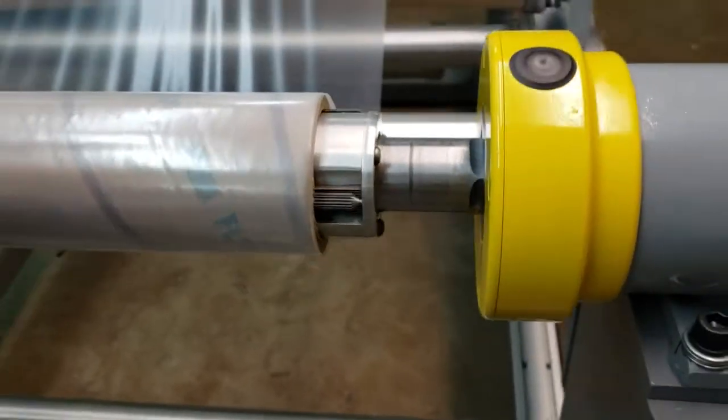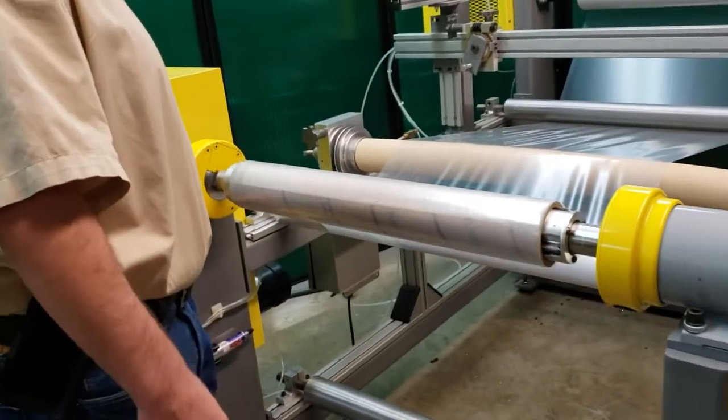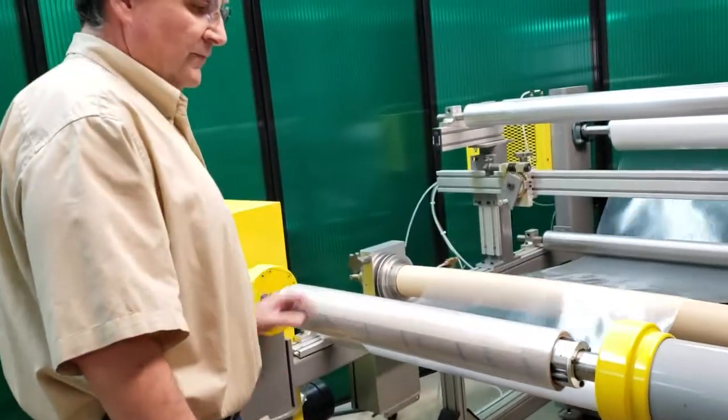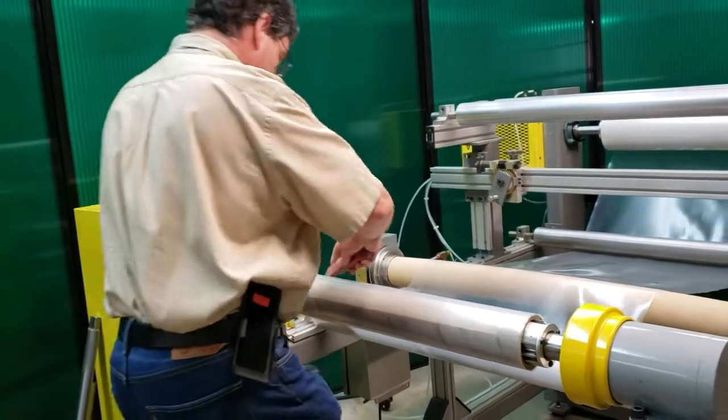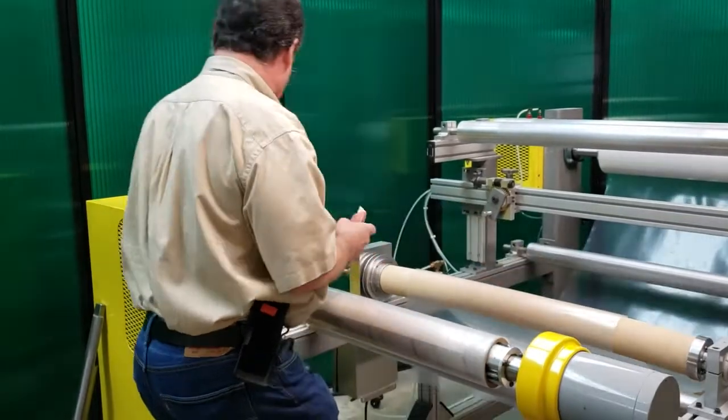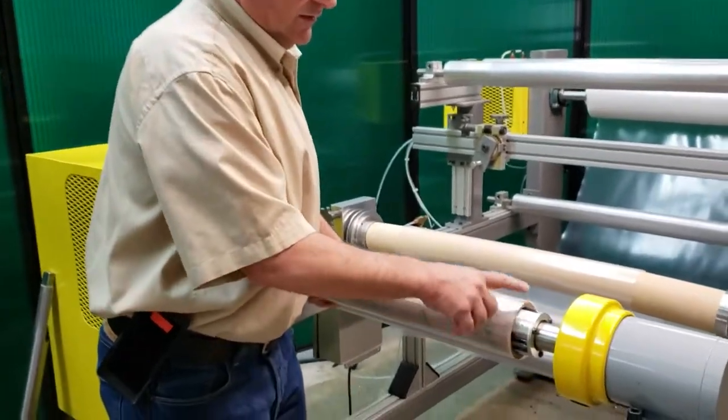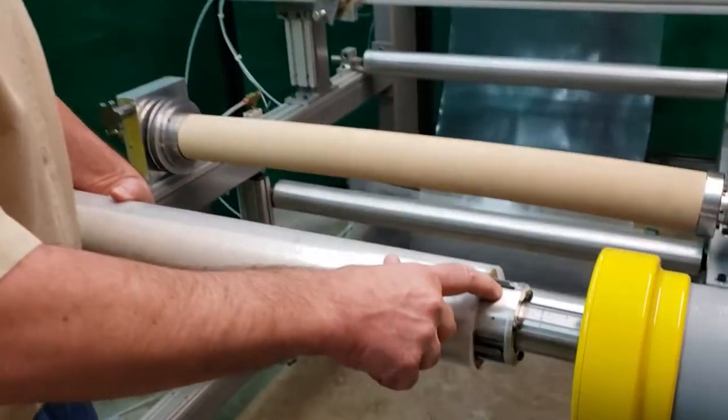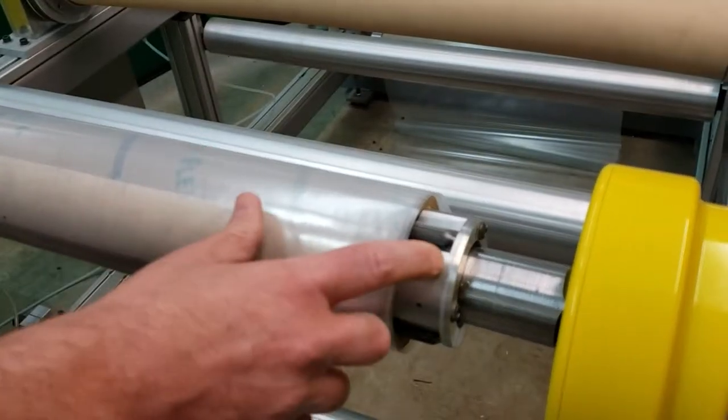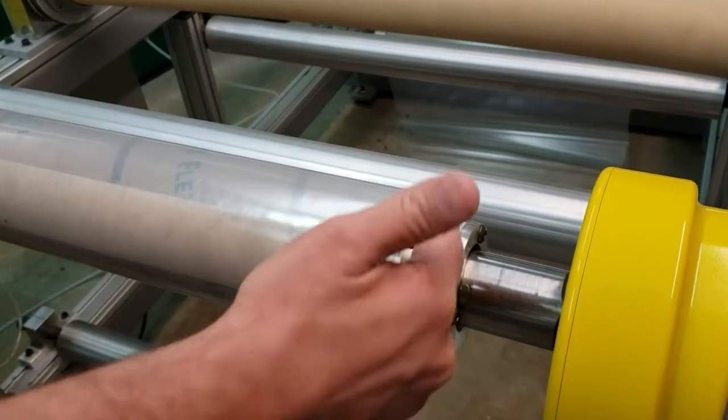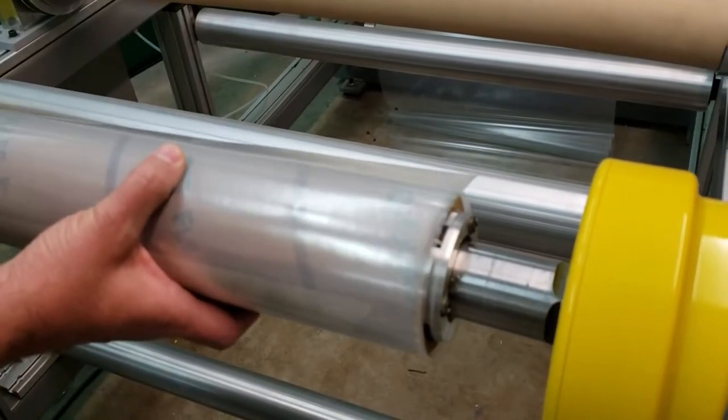So then when you want to make a roll change, what you would do is you stop your rewind, and then you'll see that these rollers are in the locked position. In order to get the roll off of the rewind, you have to get those rollers back. So if you rotate them back, now it's unlocked, and that core will slide right off.